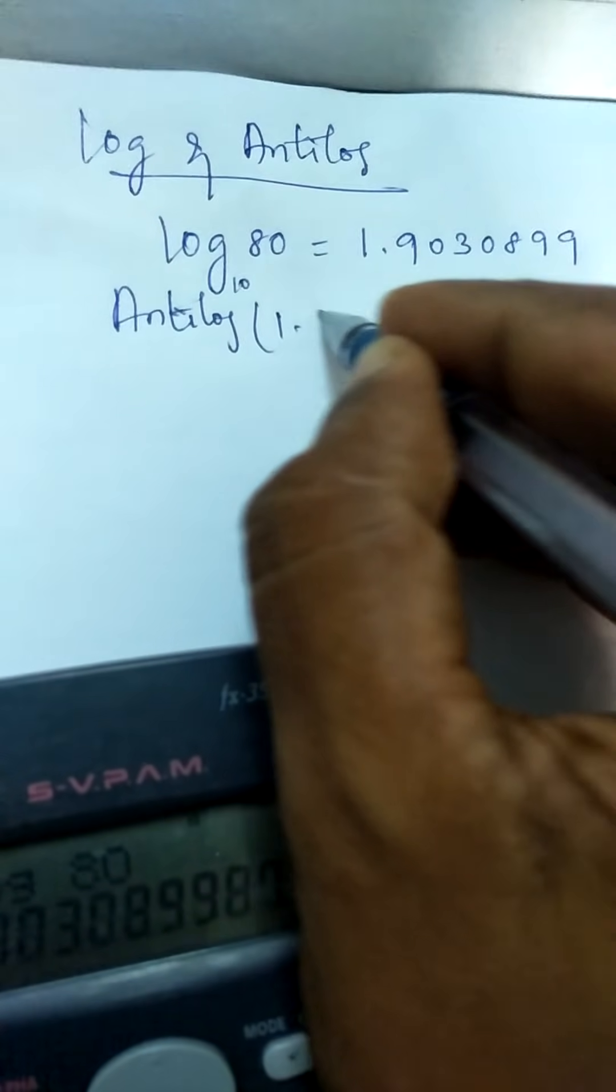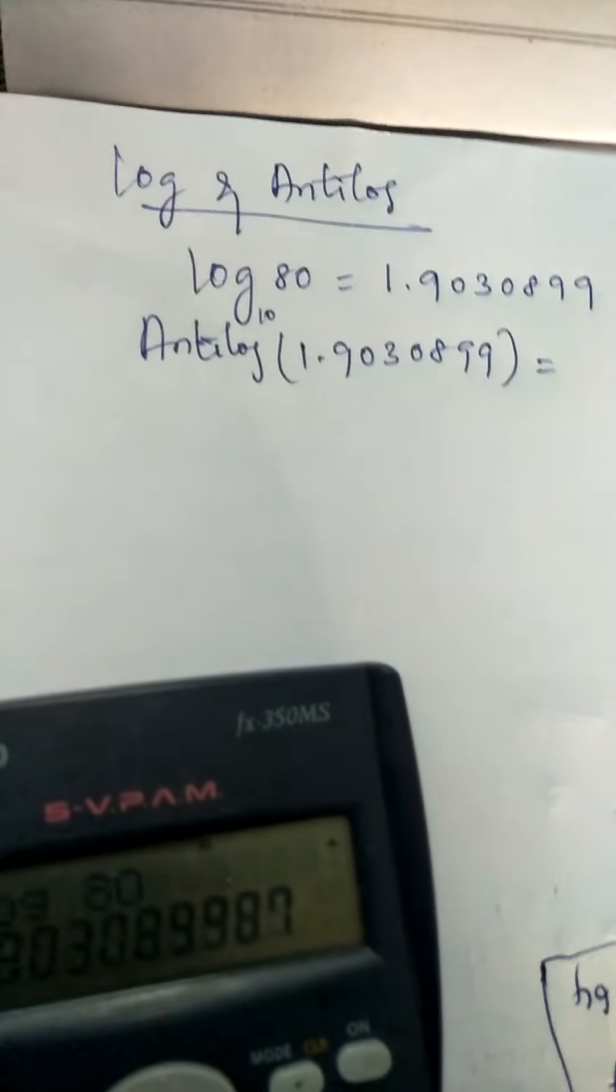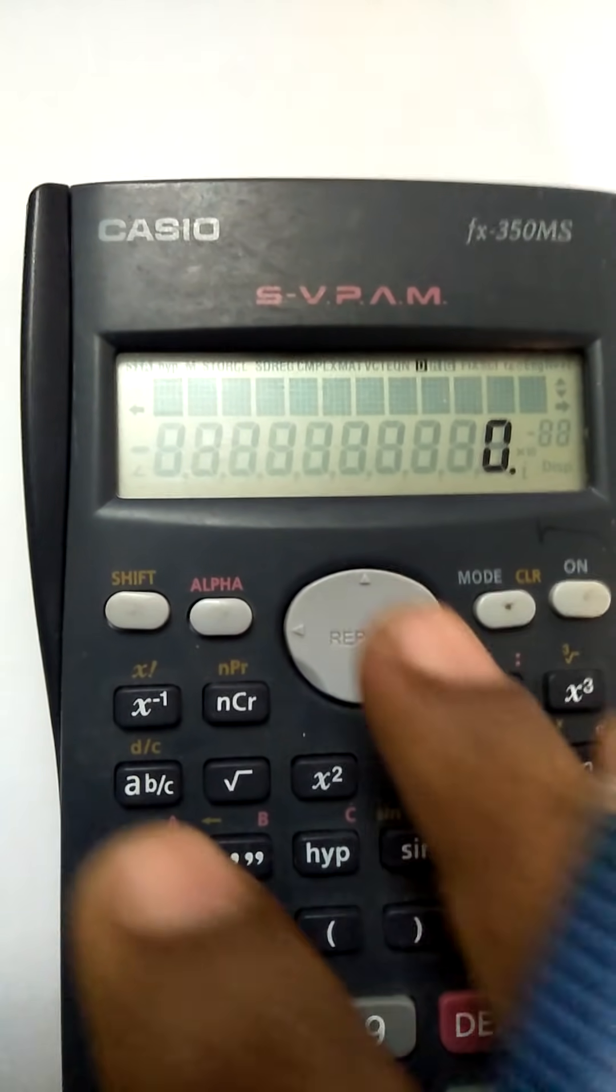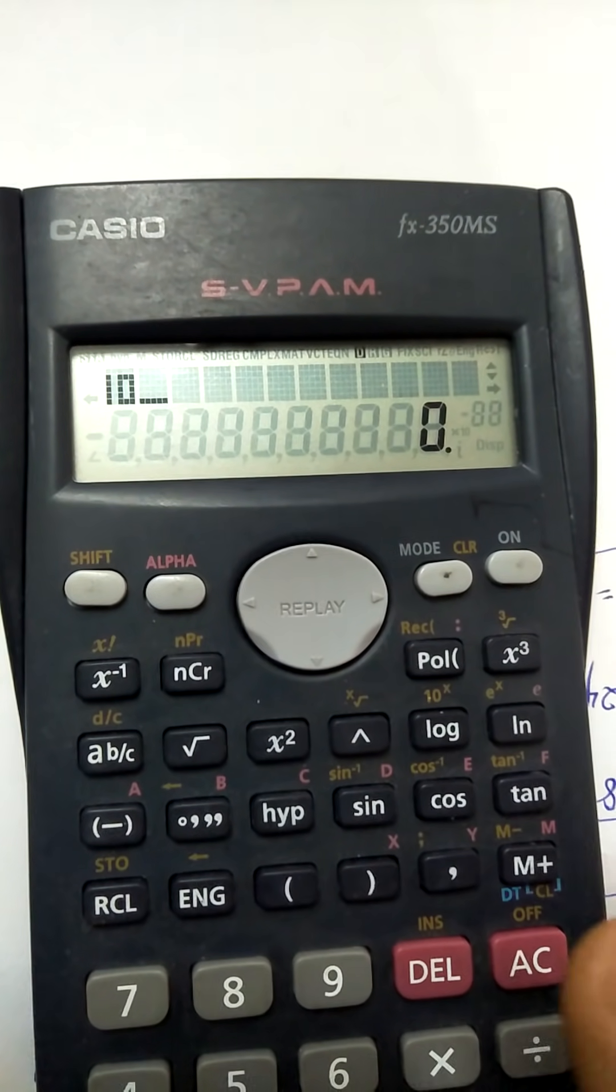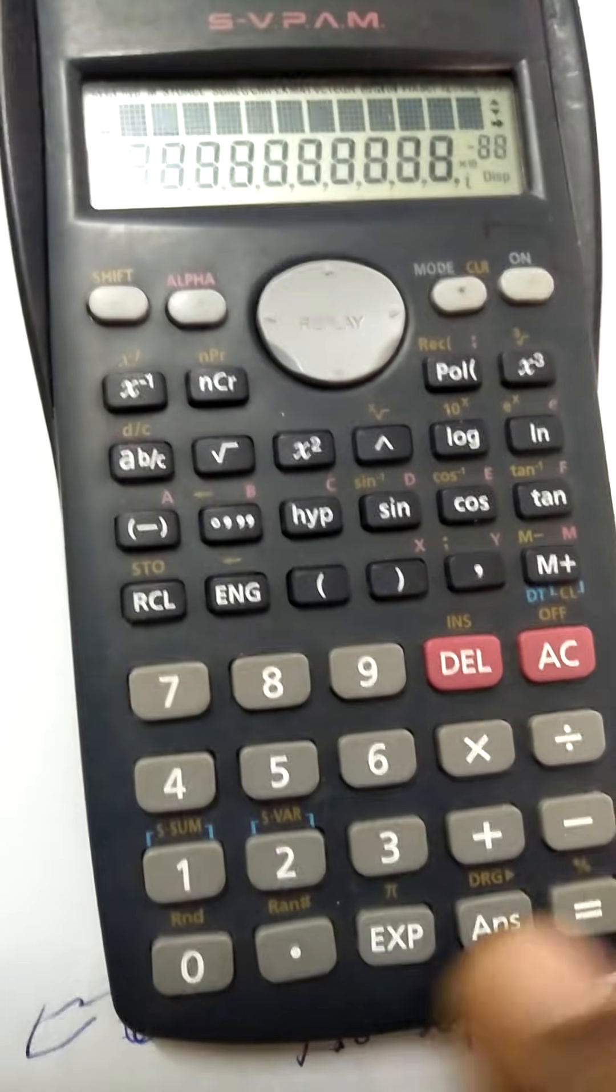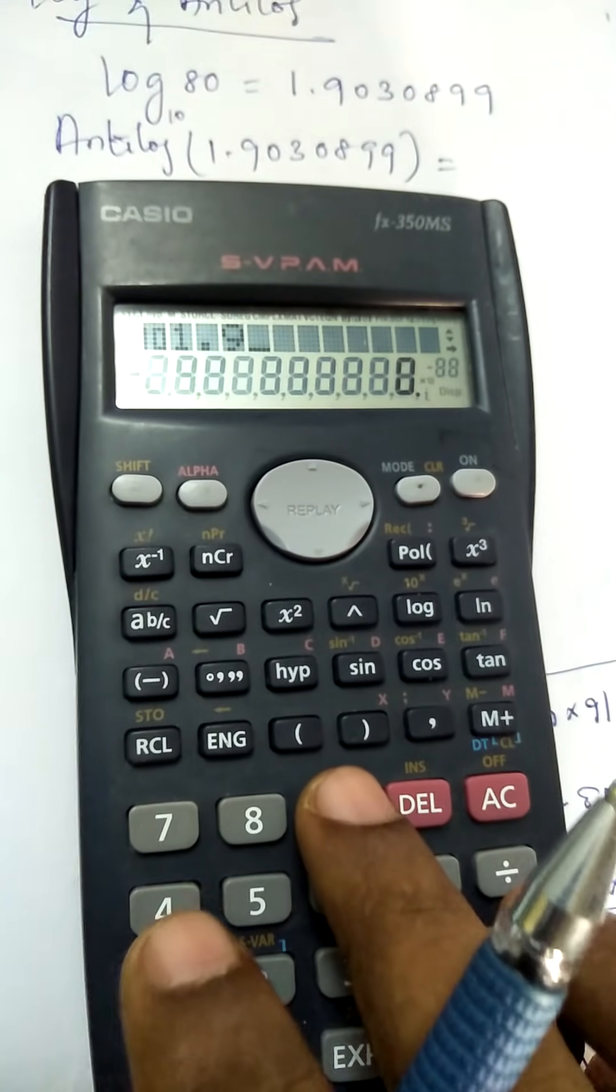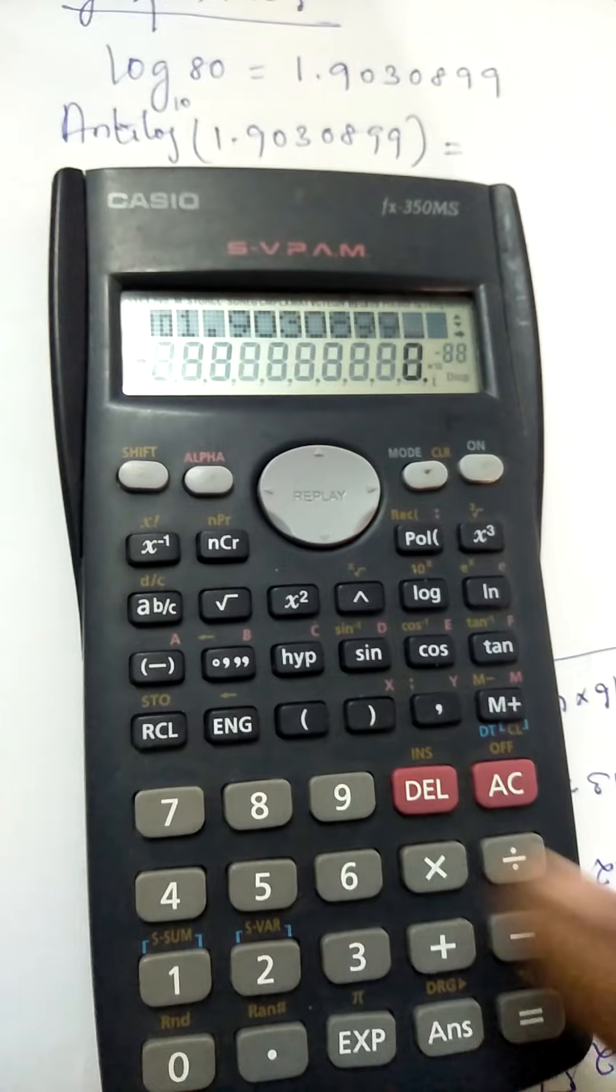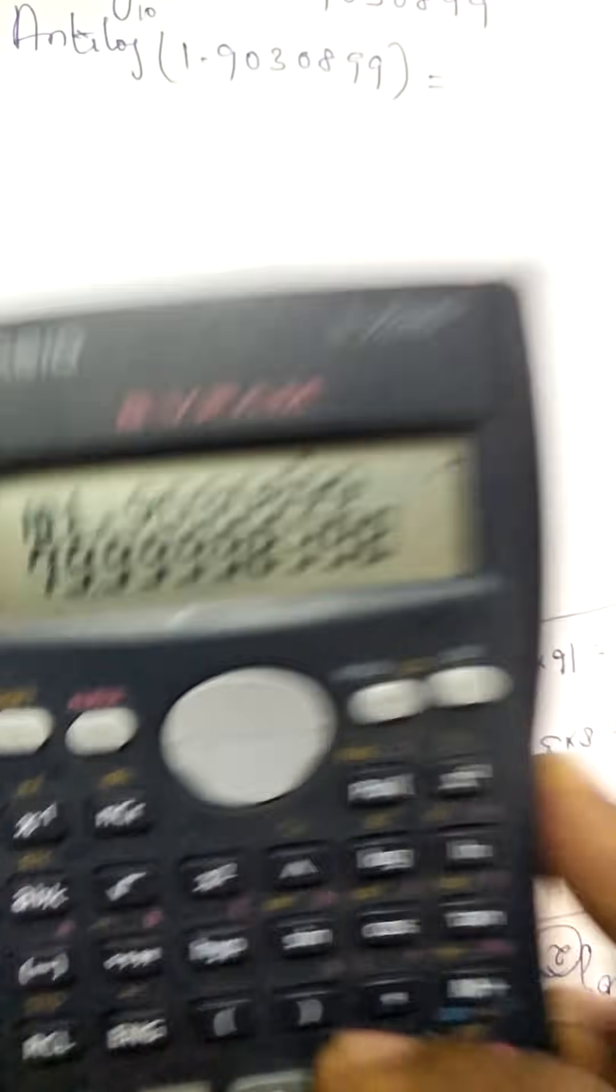So I'll check whether I am getting the value as 80. So the procedure is click shift and click log, then substitute the value of 1.9030899. The value is something like I am getting 79.999, that is equal to 80.